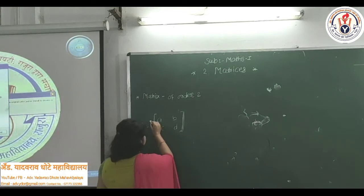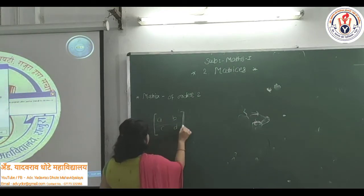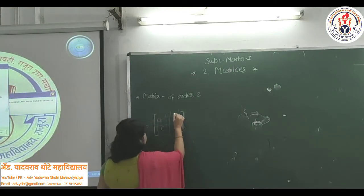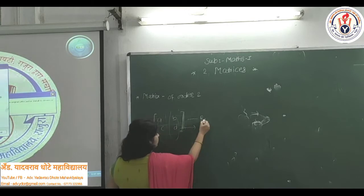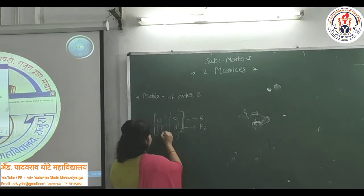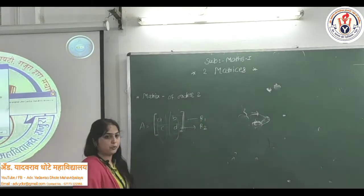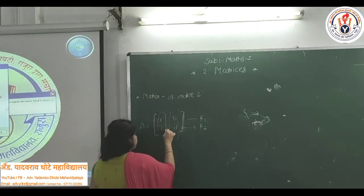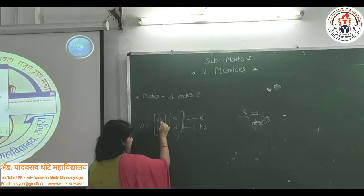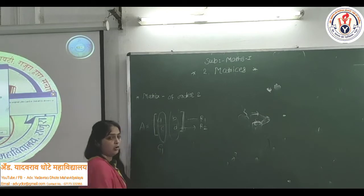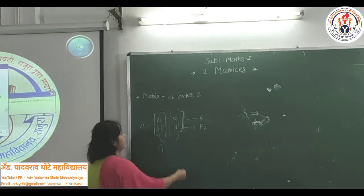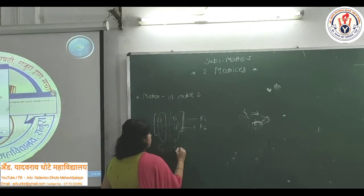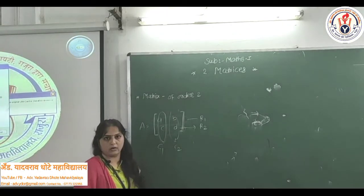In this matrix, there are 2 rows and 2 columns. These horizontal lines are called rows — this is first row R1, and this is second row R2. The vertical elements a, c form column 1 (C1), and b, d form column 2 (C2).